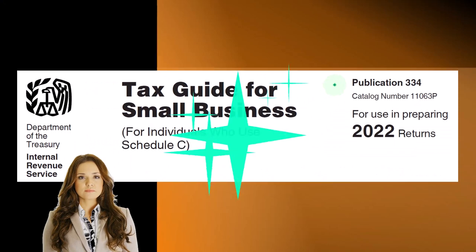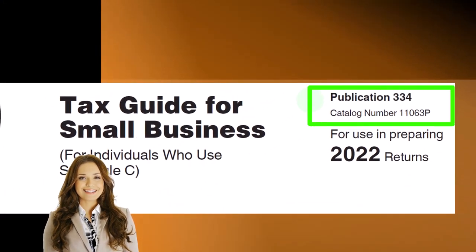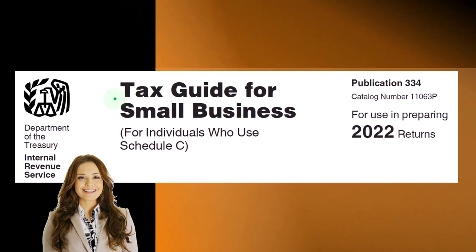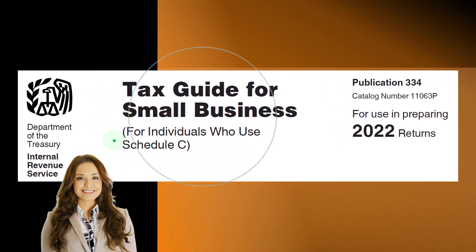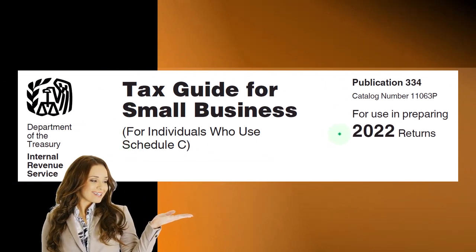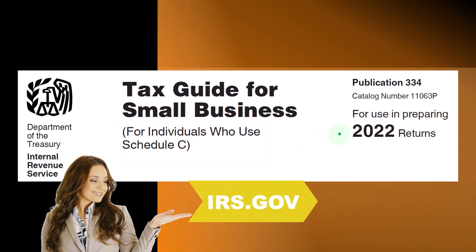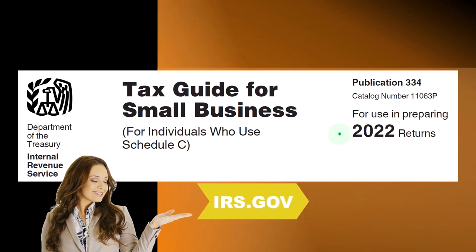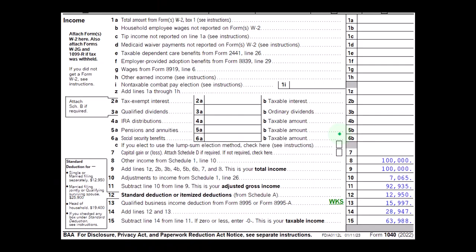Most of this information is coming from Publication 334, Tax Guide for Small Businesses for individuals who use Schedule C, tax year 2022, which you can find on the IRS website, irs.gov.